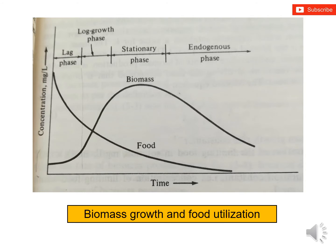This graph shows the relationship between food consumption and biomass growth. The biomass growth curve is very similar to the bacteria growth curve discussed in chapter 2 — showing the lag phase, log phase, stationary phase, and then the endogenous phase when there is no more feeding. This represents one cycle of operation.